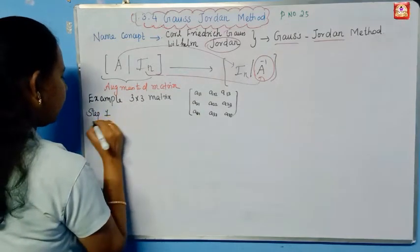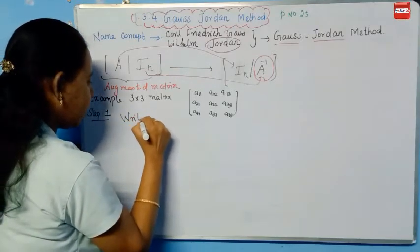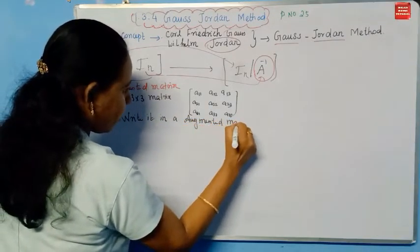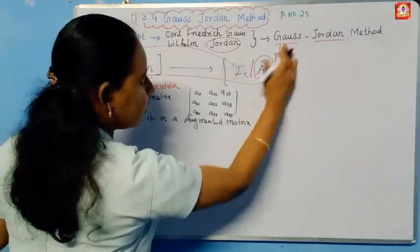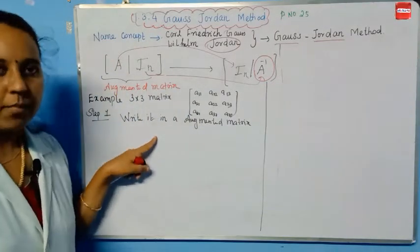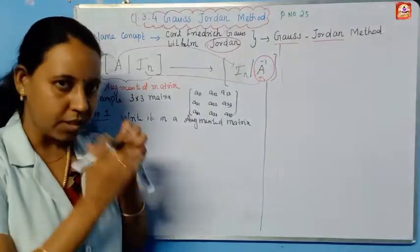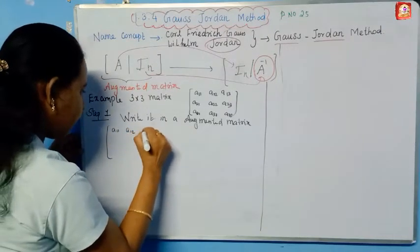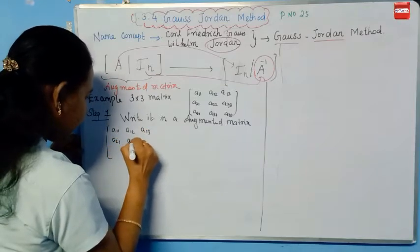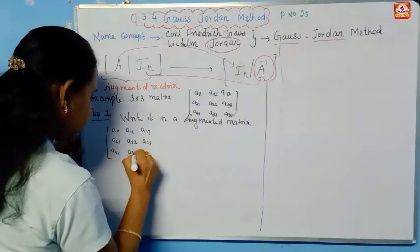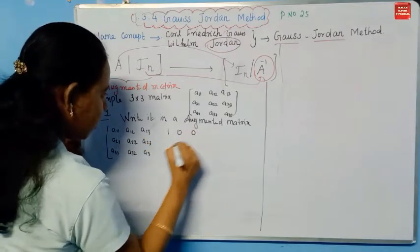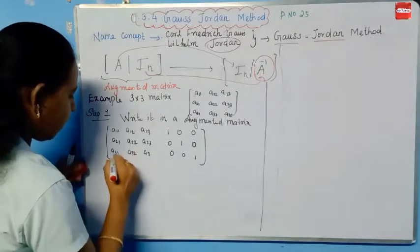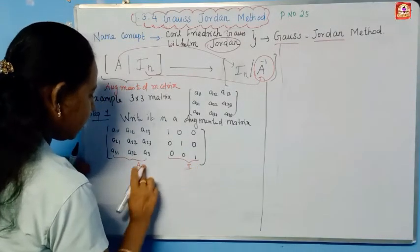Step 1: Write the augmented matrix. We take the given matrix with elements A11, A12, A13, A21, A22, A23, A31, A32, A33, and join the identity matrix — which is 1 0 0 / 0 1 0 / 0 0 1 — next to it using a separation. This combined matrix is the augmented matrix.